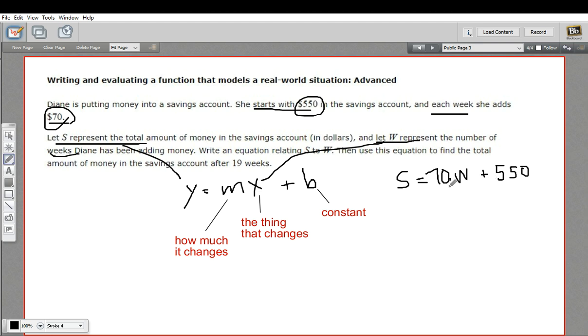After two weeks, you've put in $140. Well, you'd have two times 70, 140 plus 550. So that is our linear equation to model this situation.